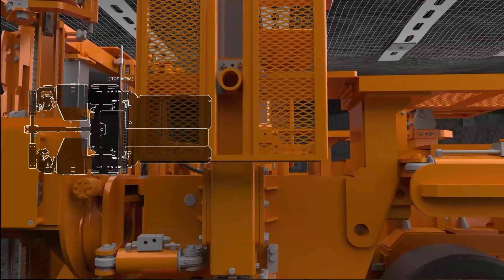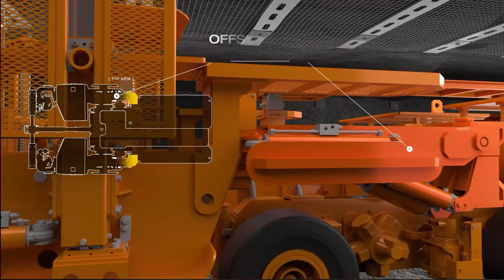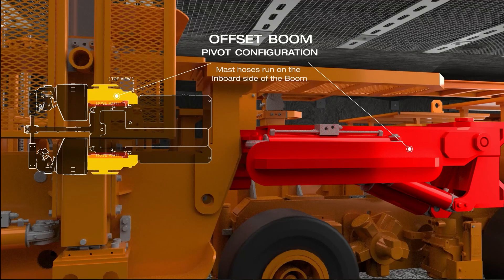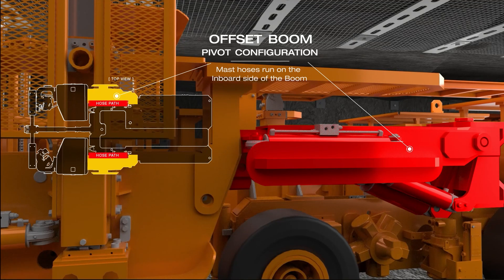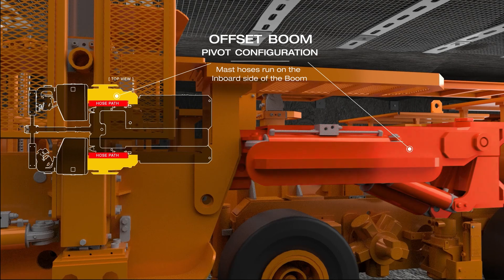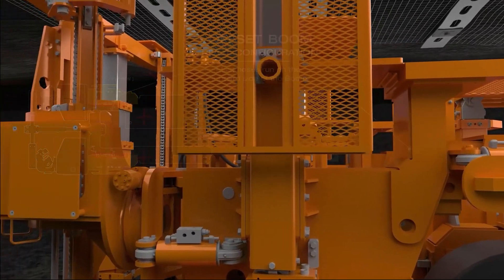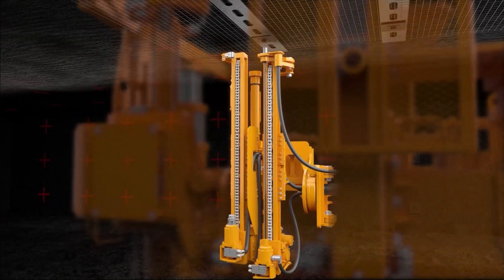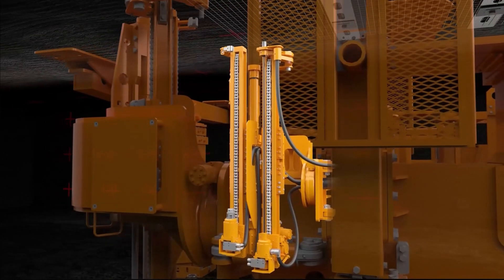The offset boom pivot configuration steps out the booms and allows for the mast hoses to be run on the inboard side of the boom. This feature has been specifically designed to minimize damage to hydraulic hose failures and the cost associated to hydraulic oil spills.